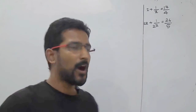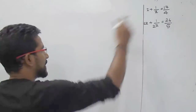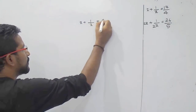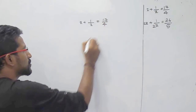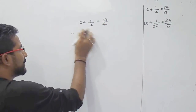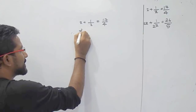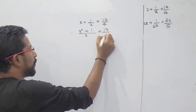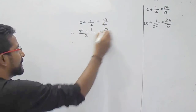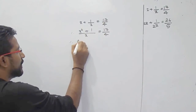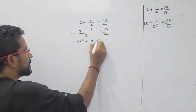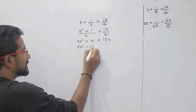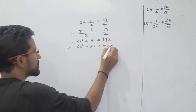First we will see how normally we solve such type of question. For example, x plus 1 upon x is equal to 17 by 4. So what we do here is cross multiplication: x into x, that is x squared, plus 1 divided by x is equal to 17 by 4. And then again we do cross multiplication: 4x squared plus 4 is equal to 17x.